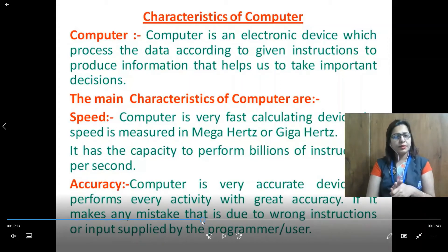First one, speed. Computer is very fast calculating device. Its speed is measured in megahertz and gigahertz. It has the capacity to perform billions of instructions per second.